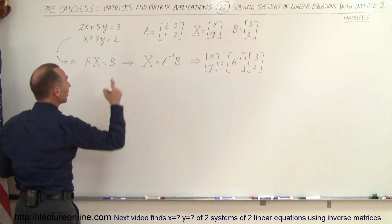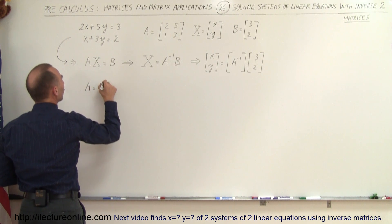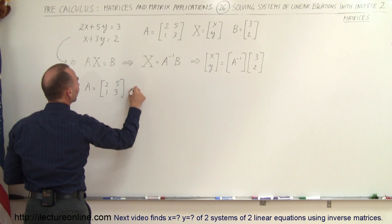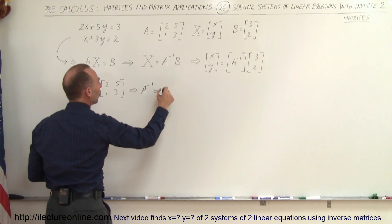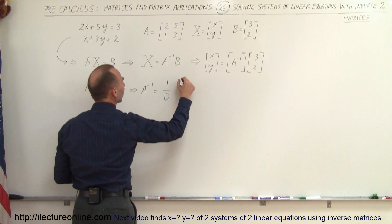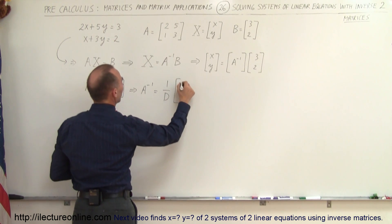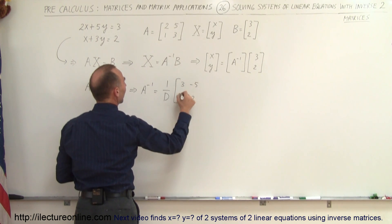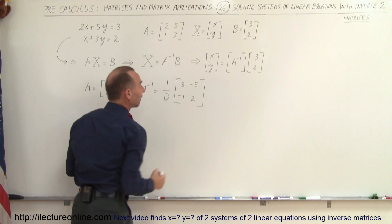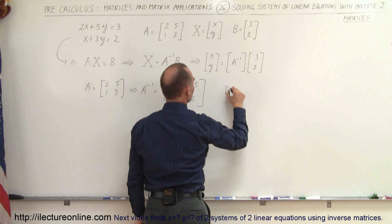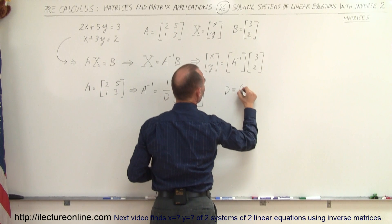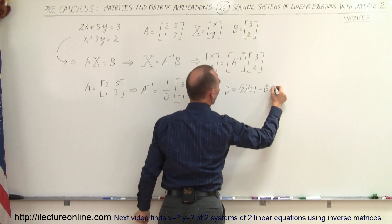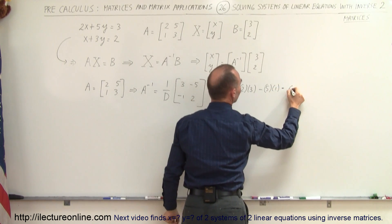Since A is equal to the matrix 2, 5, 1, and 3, we can say that the inverse of the A matrix is equal to 1 over the determinant times these two elements interchanged — so the 3 goes here and the 2 goes there — and the negative of these two elements, that's minus 5 and minus 1. The determinant is equal to 2 times 3 minus 5 times 1.